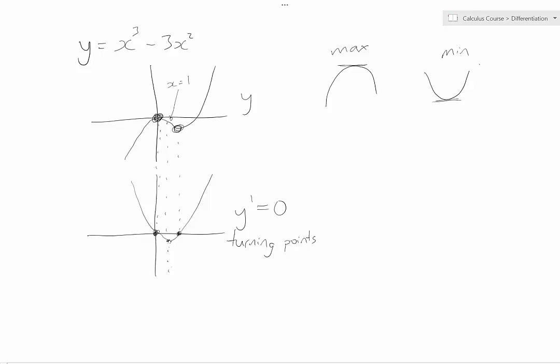Now a lot of the time it's going to be fairly obvious from looking at a graph. So for example, in this function we looked at to begin with, the x cubed minus 3x squared, over here on the left you can see it comes up, reaches a maximum, heads back down, gets a minimum, and then accelerates away again.